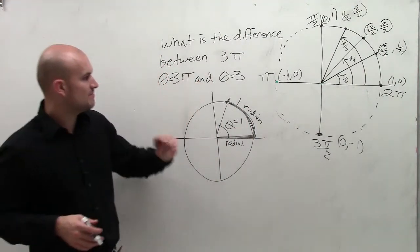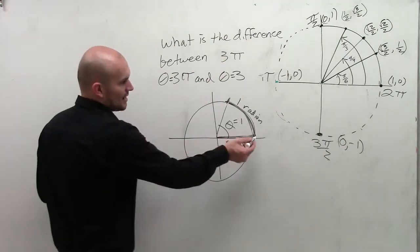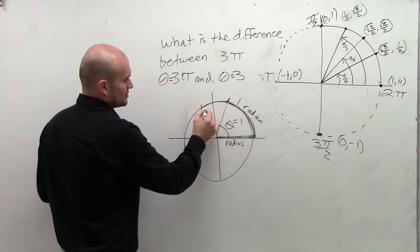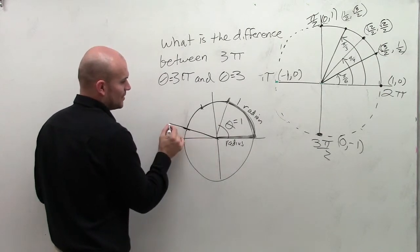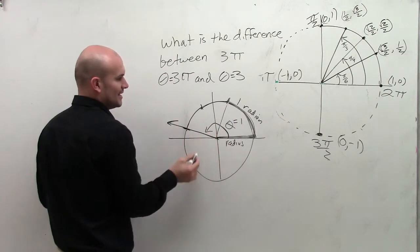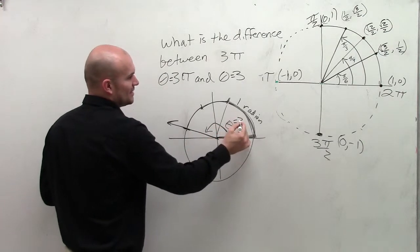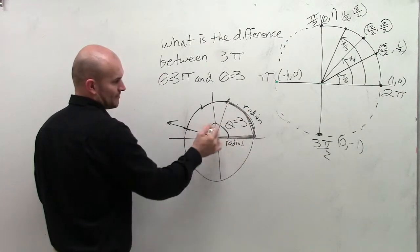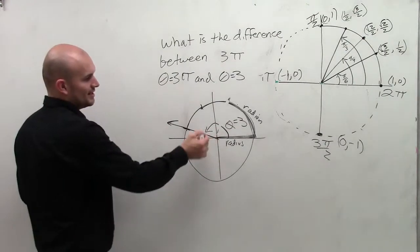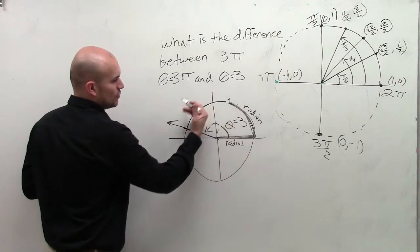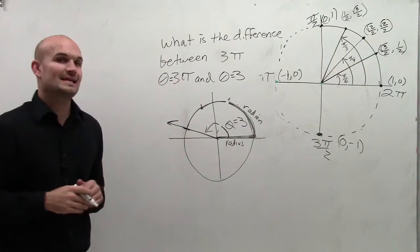So if I wanted to find the measurement of theta equal to 3, I'm going to take 1, 2, 3. And you could see if I was going to take this angle, the measurement from here to here is going to be when theta equals 3. So from here to here, if I take a ray and rotate it this far, that's when theta equals 3.